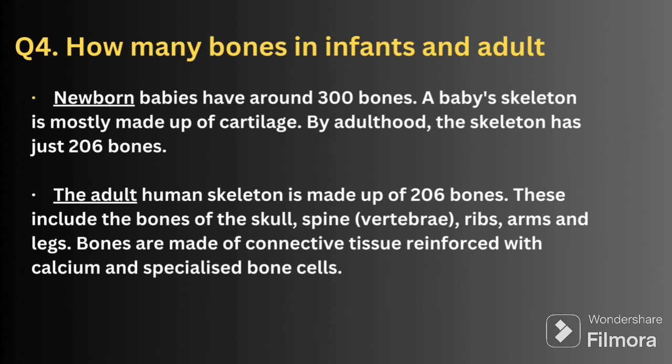The next question is: how many bones are there in an infant and an adult? Newborn babies have around 300 bones; a baby's skeleton is mostly made up of cartilage. By adulthood, the skeleton has just 206 bones. In adults, the bones include the skull, spine, vertebrae, ribs, arms, and legs. Bones are made up of connective tissue reinforced with calcium and specialized bone cells. This is an important question, so make a note of it.